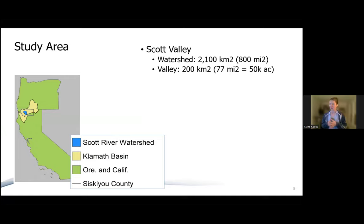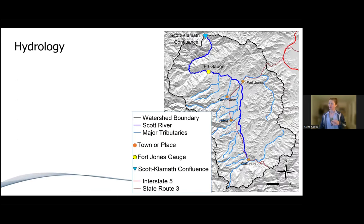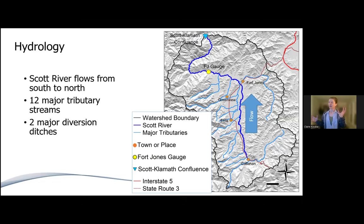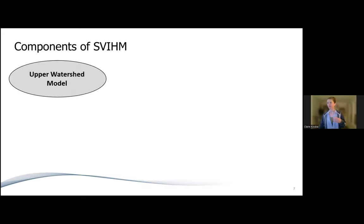Scott Valley is located in the Klamath Basin near the border between California and Oregon. The watershed is about 800 square miles; the valley itself is much smaller, around 77 square miles. The Scott River flows from south to north, winds through a steep canyon, and joins the Klamath at the far northern point of the watershed. There are 12 major tributary streams providing flow to the main stem Scott River and two major diversion ditches carrying water along the eastern side. Most tributary streams come off the western mountains where there is accumulation of snowpack and higher precipitation.